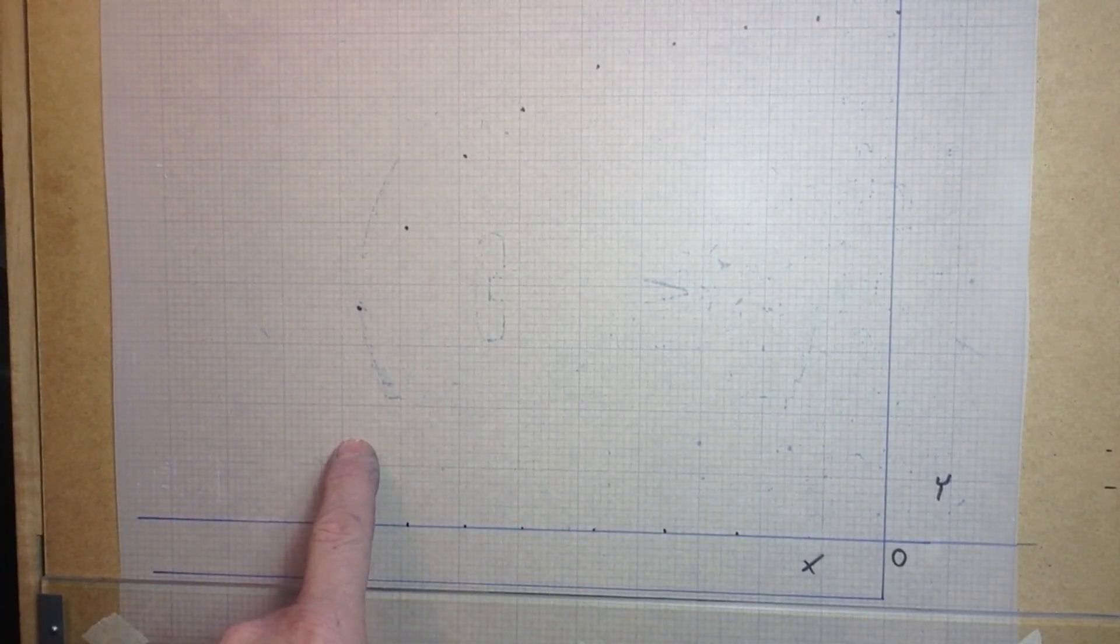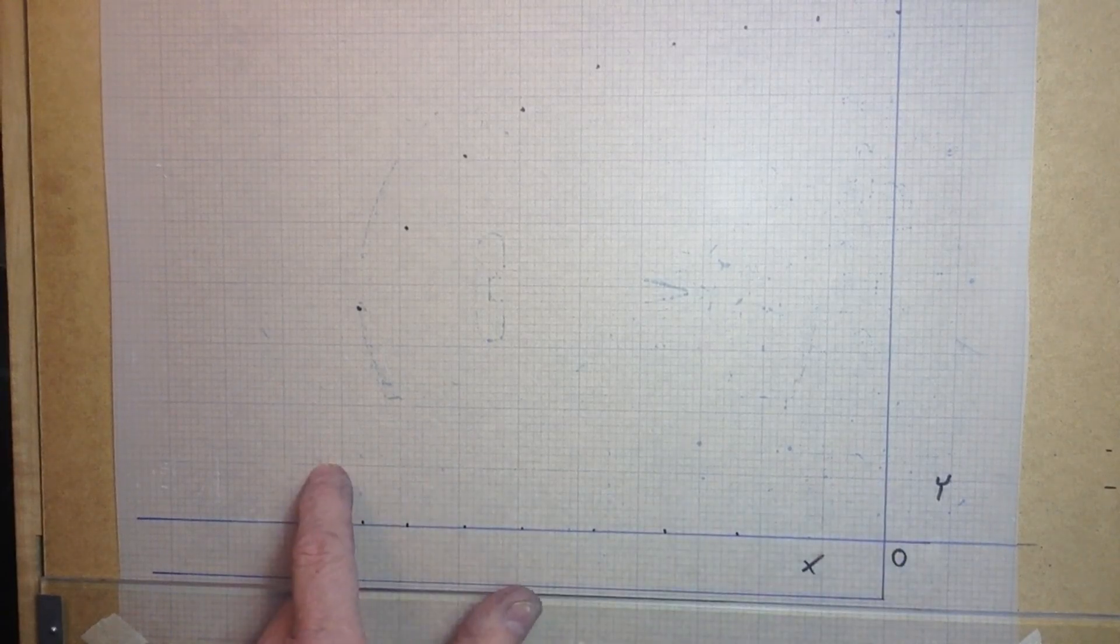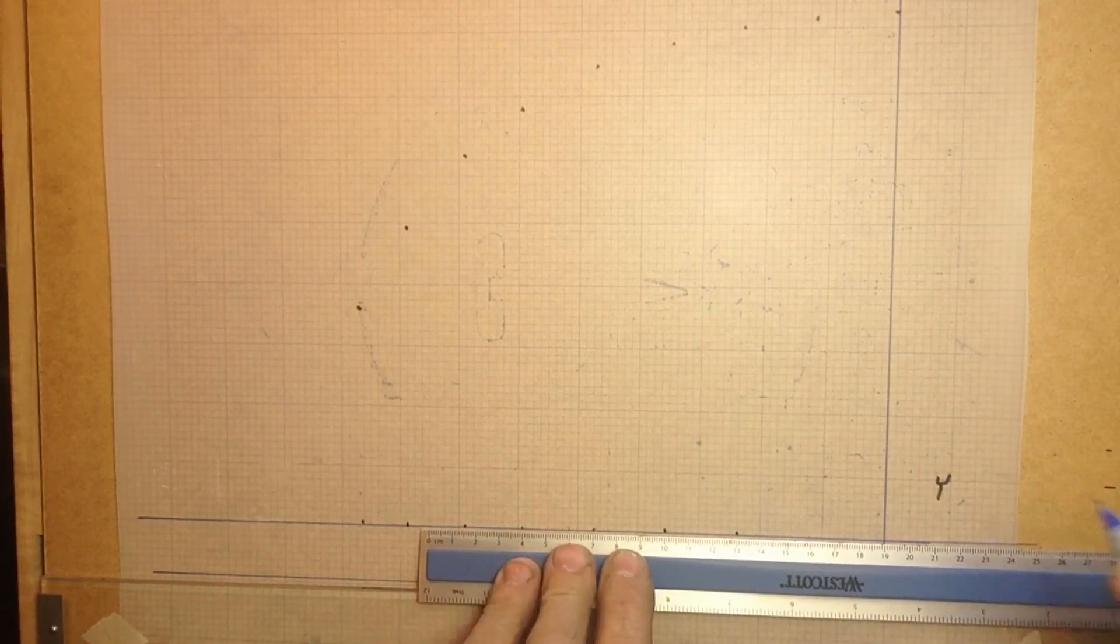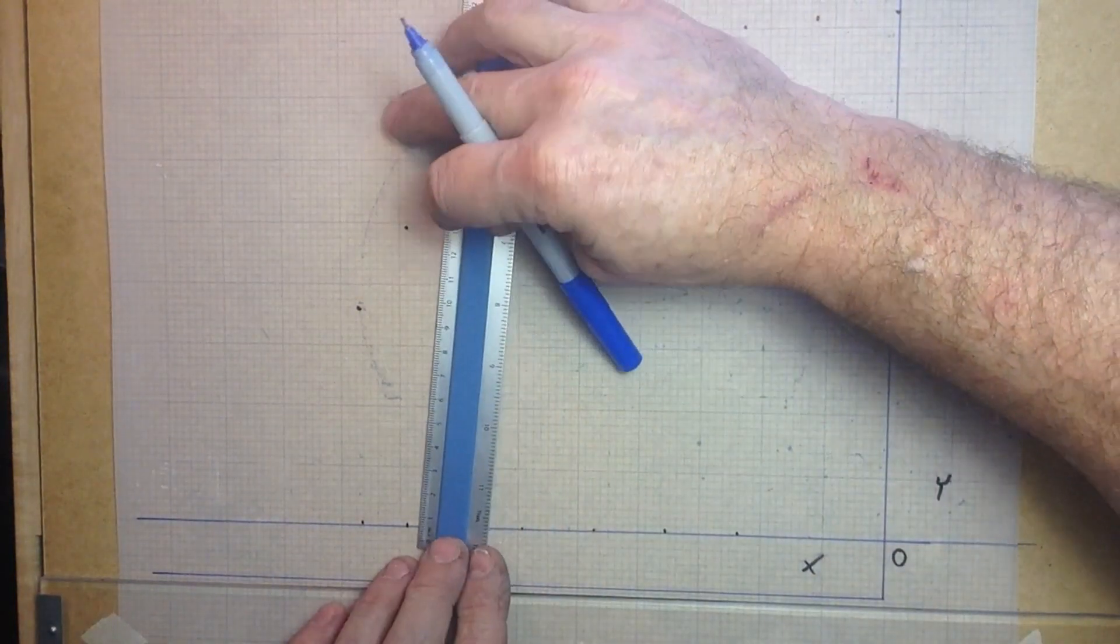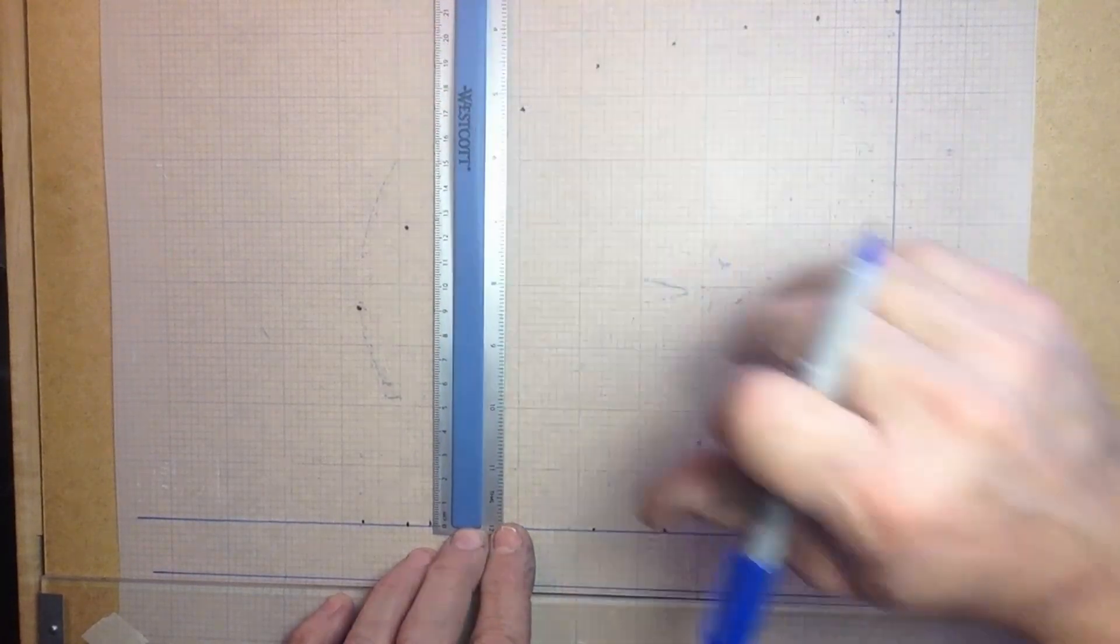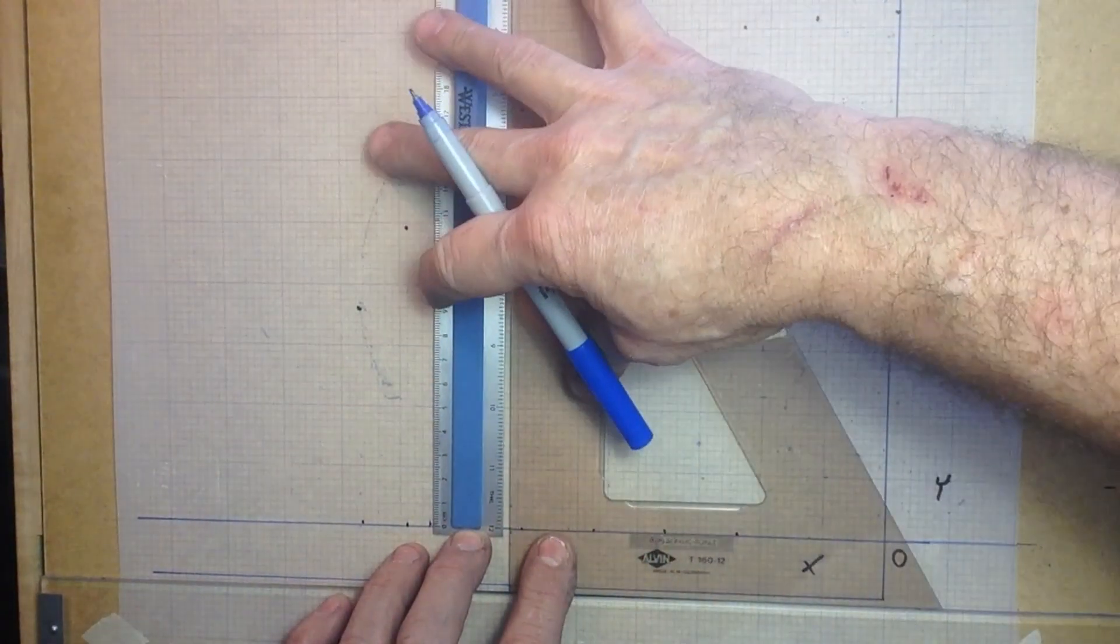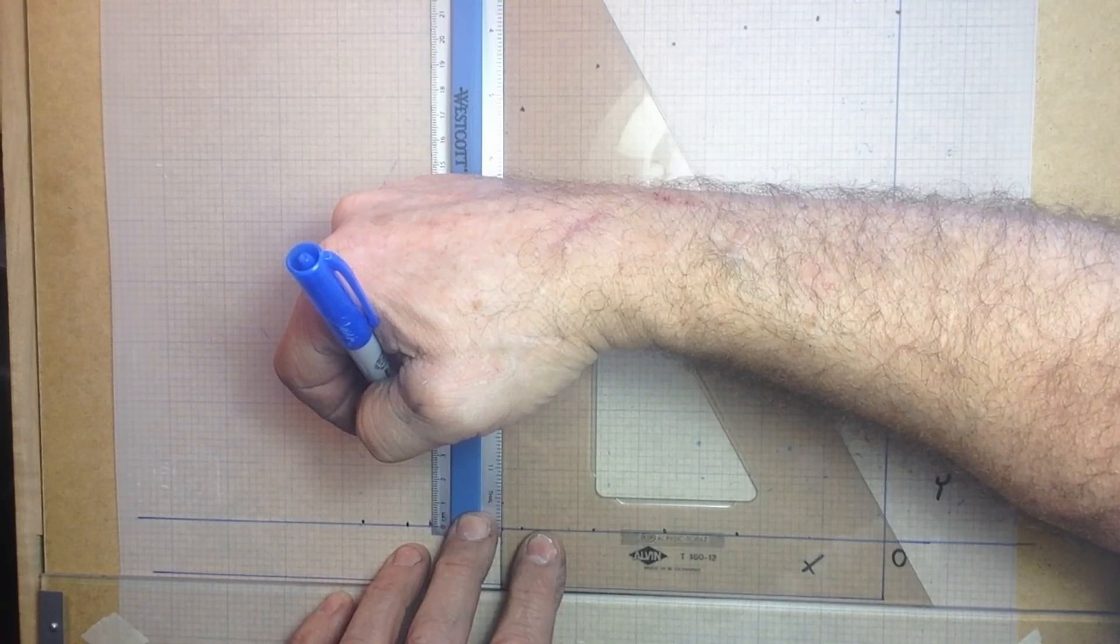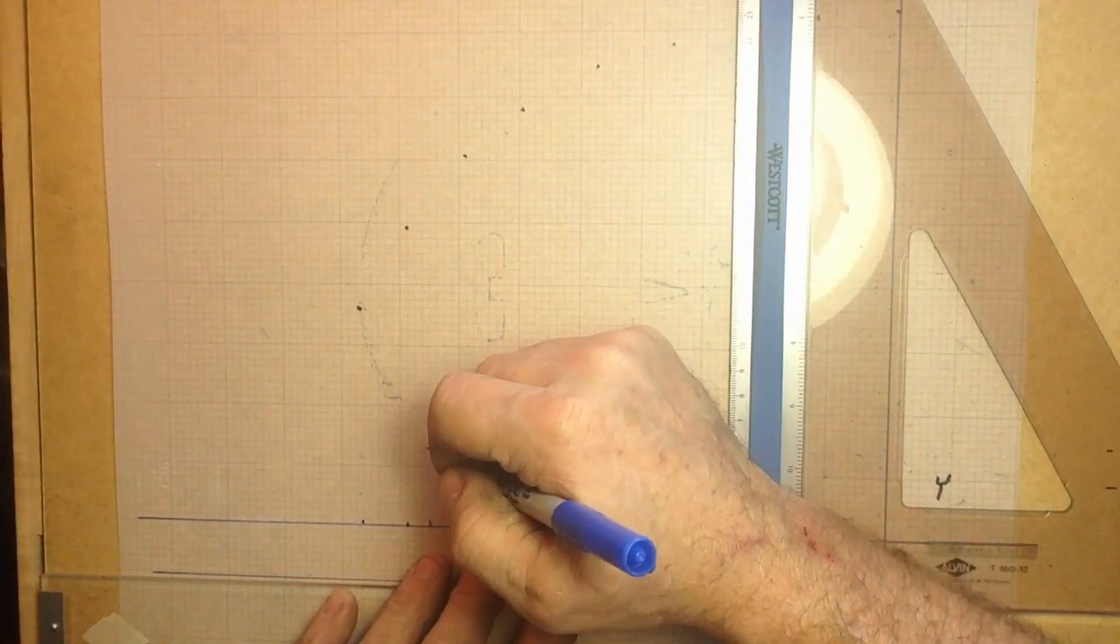We've got a tooling hole, an eighth inch tooling hole up here. It's 190 millimeters off of X and it's up 32 millimeters. Let's change this to a blue sharpie so it's a little bit easier to differentiate. We're going to come over 190 and then we're going to come up 32. Okay, so that's the one eighth inch tooling hole.